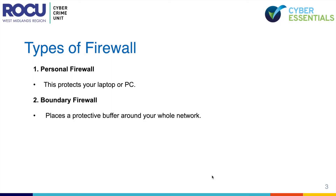There are two types of firewall: personal and boundary. Personal firewalls are specific to the device you are on, protecting a single laptop for example. Boundary firewalls place a protective buffer around the entire network and are meant for more complicated setups with more devices.